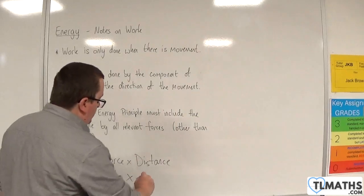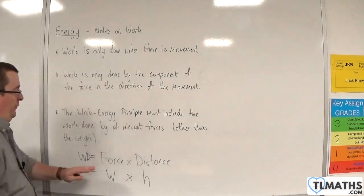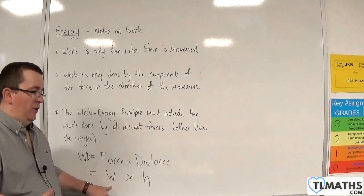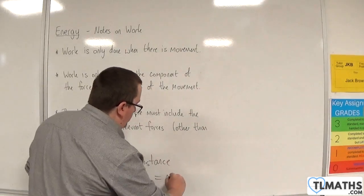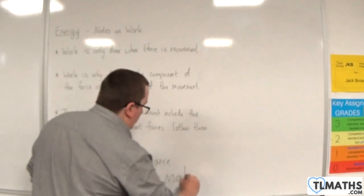Which may well be a certain height. And of course W is M times G, so weight is M times G, and that's being multiplied by H.